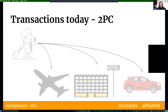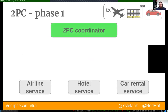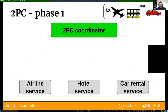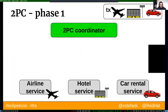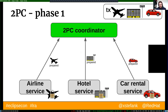In 2PC you have a standalone process called a coordinator which manages the transaction. The coordinator gets the transaction description, asks all individual services for the resources described in the transaction, and those services need to locate and lock those resources — for example, putting the flight ticket somewhere so no one else can take it in the meantime.